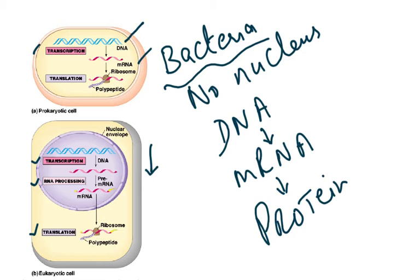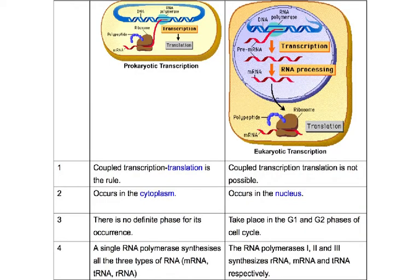RNA processing can only take place in eukaryotes — animal cells, plant cells, and fungal cells. We can also use yeast cells in genetic technology because yeast is a eukaryote. This is a good comparison to work through.